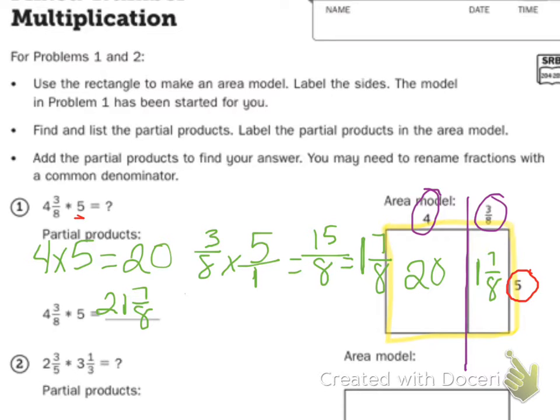Then down at the bottom, it says to write a number story that matches problem 1. And then 4 and 5, you're solving that addition. Remember, your first step is to find your common denominator.